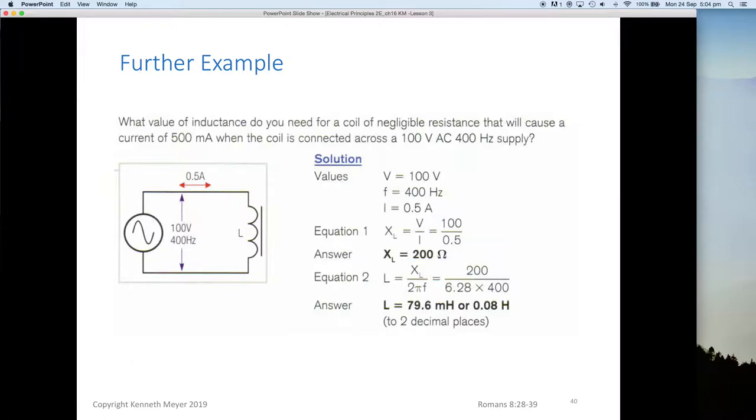So a further example. What value of inductance do you need for a coil of negligible resistance that will cause 500 milliamps when the coil is connected to 100 volts AC at 400 Hertz? So we have 100 volts, 400 Hertz, and we have 0.5 of an amp. How do we solve that?